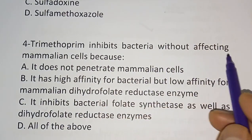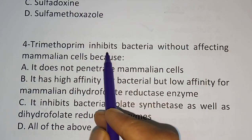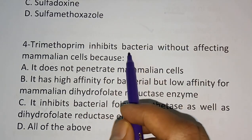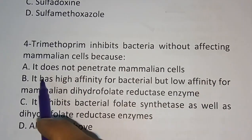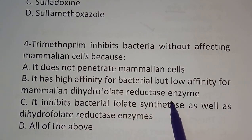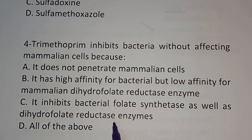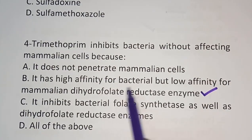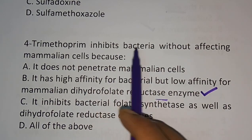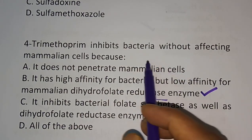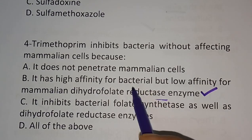Question four: trimethoprim inhibits bacteria without affecting mammalian cells because — options are: A) it does not penetrate mammalian cells; B) it has high affinity for bacterial but low affinity for mammalian dihydrofolate reductase enzyme; C) it inhibits bacterial dihydrofolate reductase enzyme. The correct answer is option B: trimethoprim has high affinity for bacterial dihydrofolate reductase and low affinity for mammalian dihydrofolate reductase.